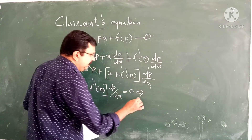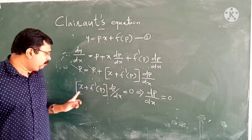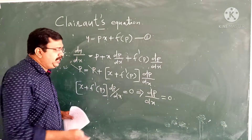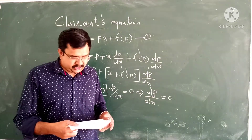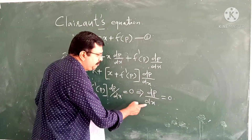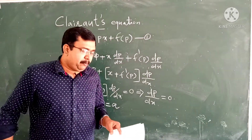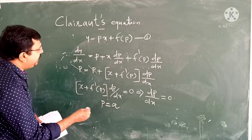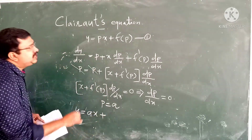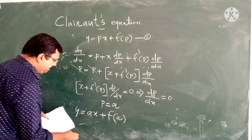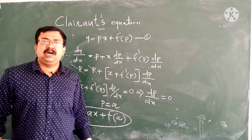Which implies dp by dx equal to 0. That is dp by dx will become 0, so we get dp by dx equal to 0. The derivative of a constant is always 0, therefore p is a constant. Suppose p equal to a where a is a constant. Putting this value in equation number 1, we get y equal to ax plus f of a, which is the required solution.